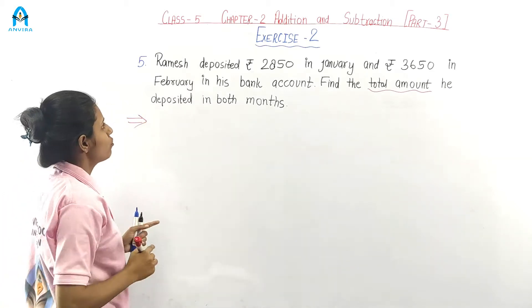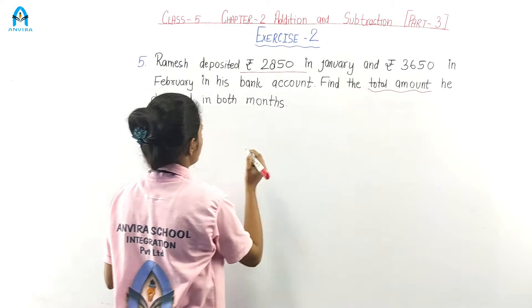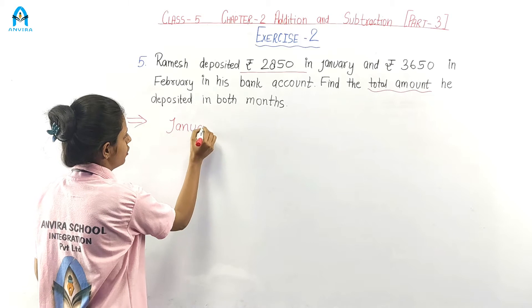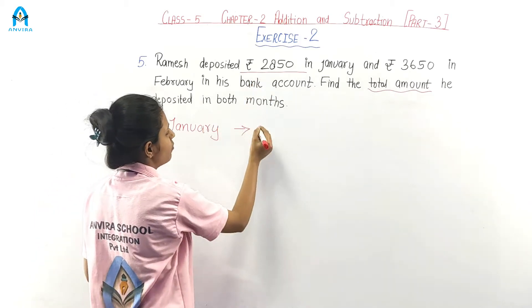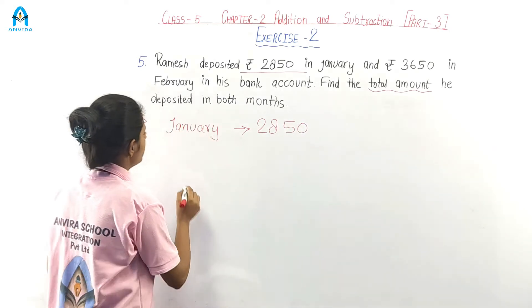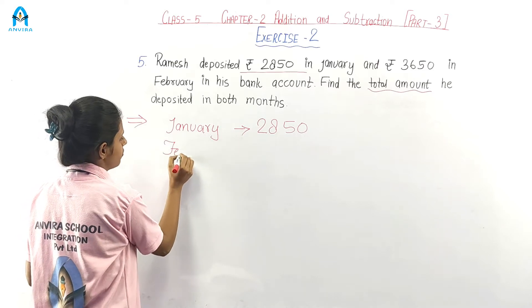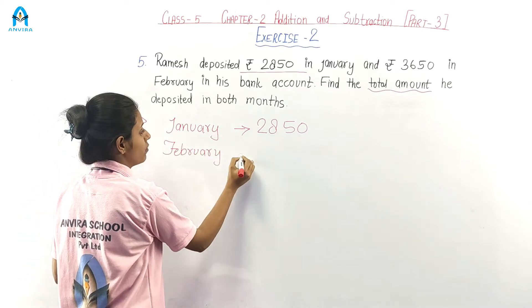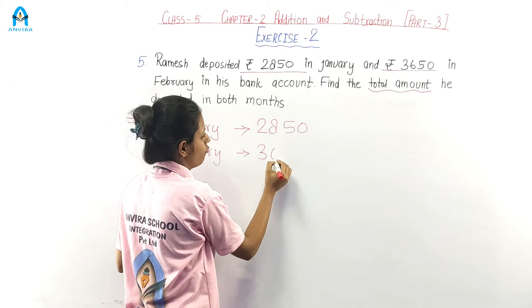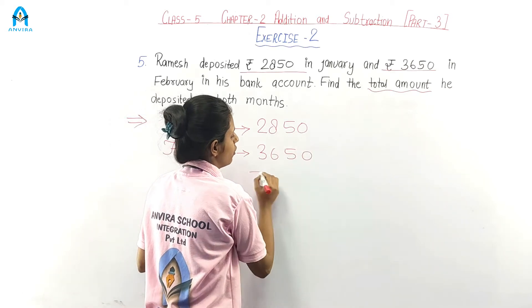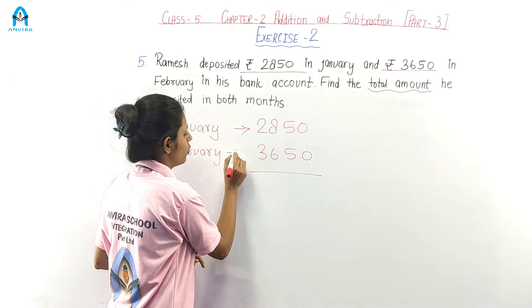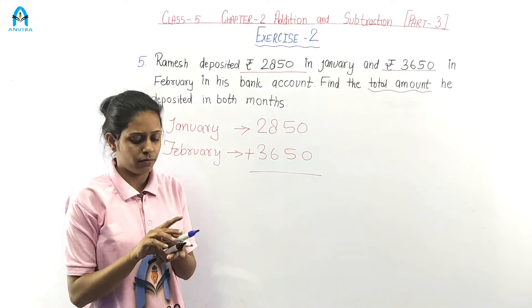So let's start. He deposited in January Rs. 2,850, and in February Rs. 3,650. We have to find the total amount, so we have to add.